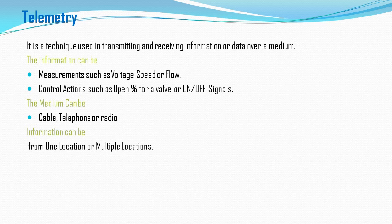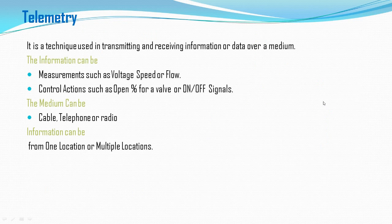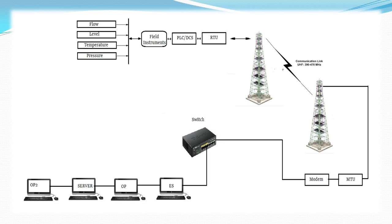The mediums or ways you can use to transmit information from the local site to the master control room include cable, telephone, or radio. You can also have a high-speed connection from an internet service provider to get the facility of transferring information from the local site to the master control room.